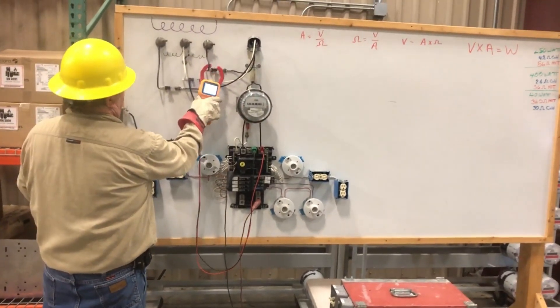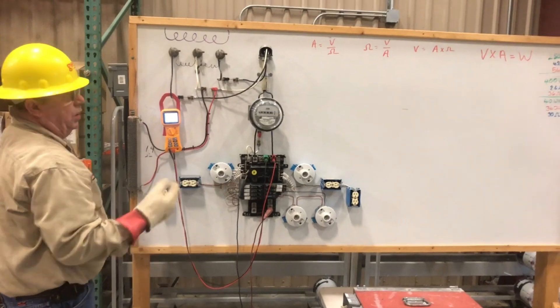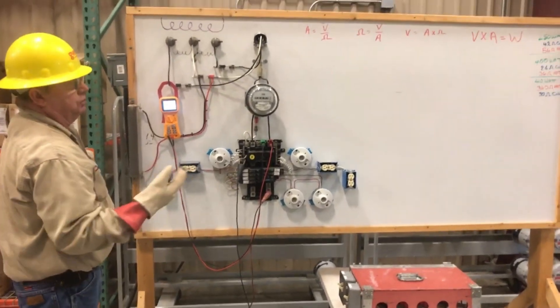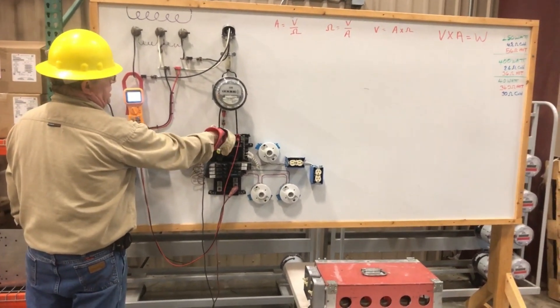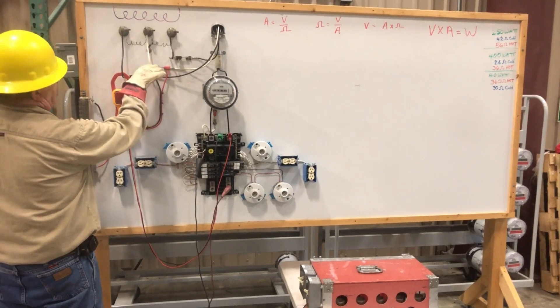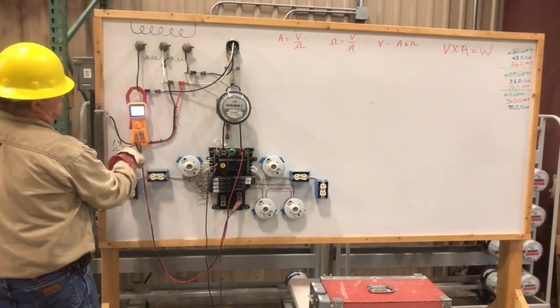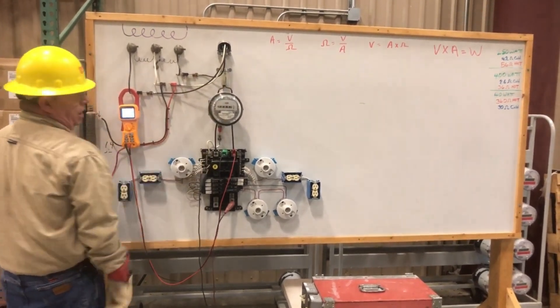Now the other point that I want to make here is that depending on where you measure the neutral determines the voltage reading that you get. So I'm going to take this neutral from the meter socket that's on the downstream side. So we come through, we go through the resistive block, we go through the resistor, we come back, we pass through the meter socket and go to the neutral bar.